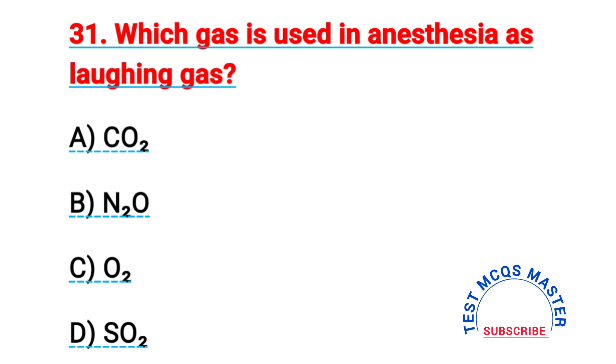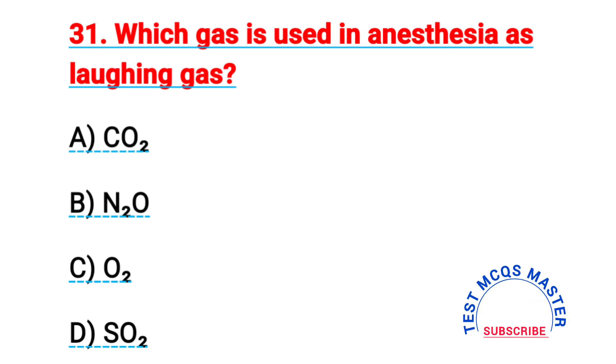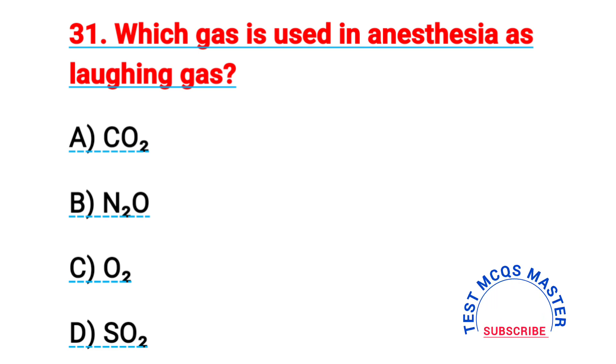Question number thirty-one: which gas is used in anesthesia, known as laughing gas? The right answer is B, N2O (nitrous oxide).